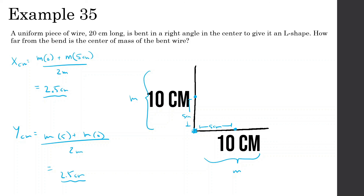Now we can use the Pythagorean theorem to find the distance from the bend. The square root of (2.5 squared plus 2.5 squared) gives 3.54 centimeters. So from the bend, the center of mass is 3.54 centimeters away.